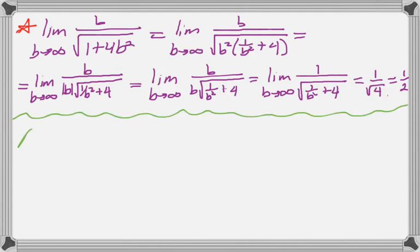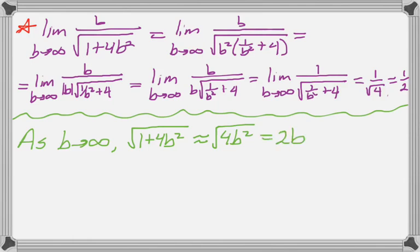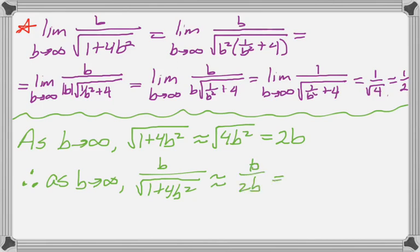Let me give you a different way of thinking about it, which is a little easier. As b approaches infinity, radical 1 plus 4b squared kind of approaches radical 4b squared, because the 1 becomes insignificant as you go to infinity, and that is definitely 2b. Therefore, as b approaches infinity, b over radical 1 plus 4b squared should approach b over 2b, which is 1 half. And so that's how I would handle that limit.